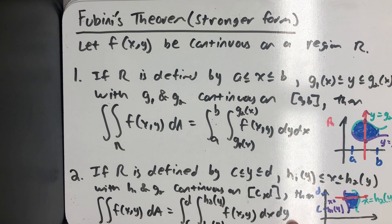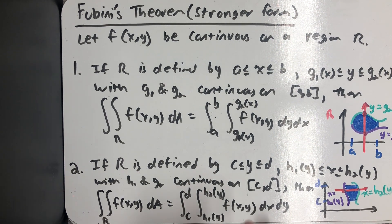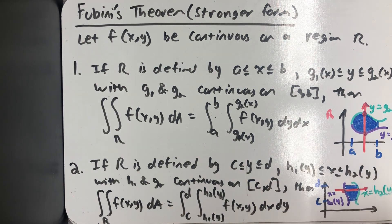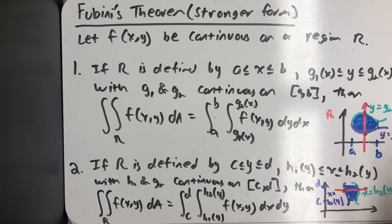Fubini's theorem in the second form gives me a choice. I can integrate with respect to y and then x, or x and then y. Based on that choice, I need to be thinking either left function, right function, or top function, bottom function.